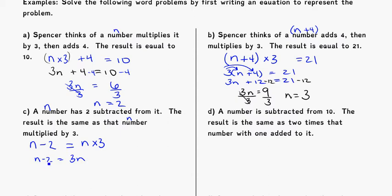Now I need to solve this. Since I've got variables on both sides, I'll get all the N's on one side together. Subtract N from both sides — N minus N cancels, leaving negative 2 is equal to 3N minus N, which is 2N. Then divide by 2 on both sides: negative 2 divided by 2 is negative 1, so N is equal to negative 1. We can double check: negative 1 minus 2 is negative 3, and negative 1 times 3 is also negative 3. We get the same thing on both sides.